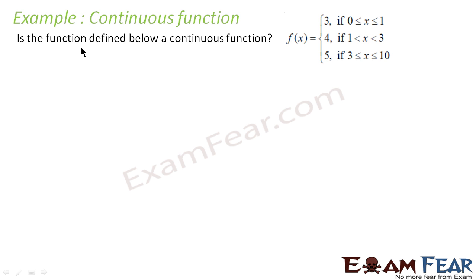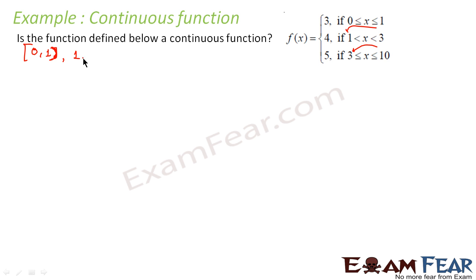Let's take one more example. This is different from the examples we have solved because here we have more breakpoints — there are two breakpoints. We'll show how to solve questions where you have more than one breakpoint. This function can be divided into multiple buckets: zero to one (one not included), then one as a separate bucket, then one to three (neither included), then three as a separate bucket, and then three to ten.